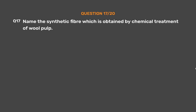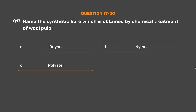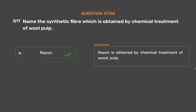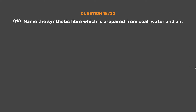Question Number 17. Name the synthetic fiber which is obtained by chemical treatment of wood pulp. The correct answer is Option A: Rayon. Rayon is obtained by chemical treatment of wood pulp.